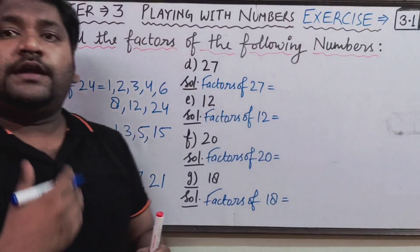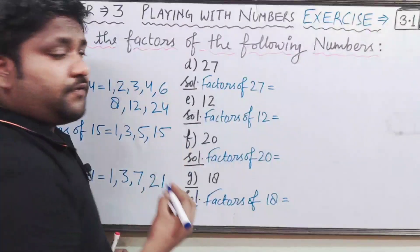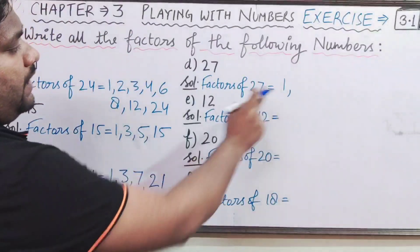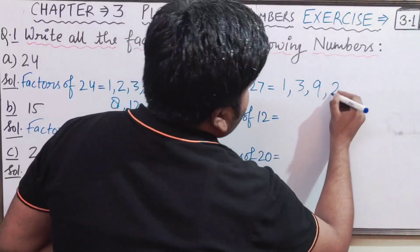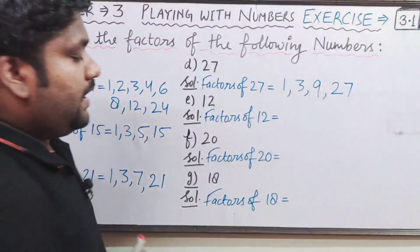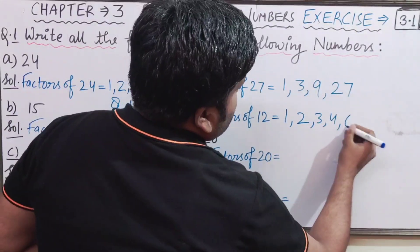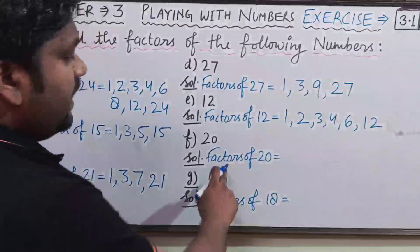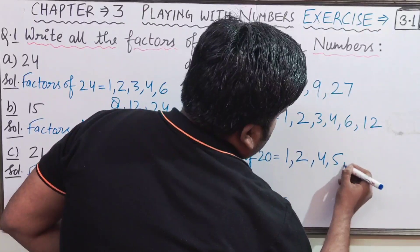Now let us write the factors of 27. One is the first and smallest factor of every number. Then 3 × 9 = 27, 9 × 3 = 27, and 27 × 1 = 27 — so the four factors of 27 are 1, 3, 9, and 27. For 12: it is divisible by 1, then 2 × 6 = 12, 3 × 4 = 12, 4 × 3 = 12, 6 × 2 = 12, and 12 × 1 = 12 — so the factors of 12 are 1, 2, 3, 4, 6, and 12.